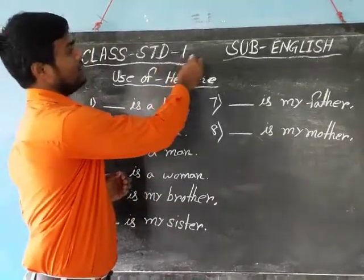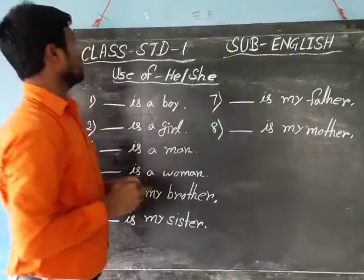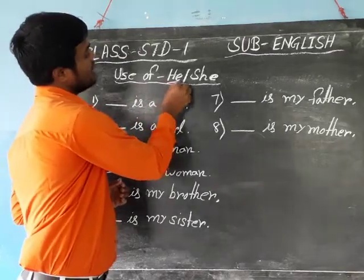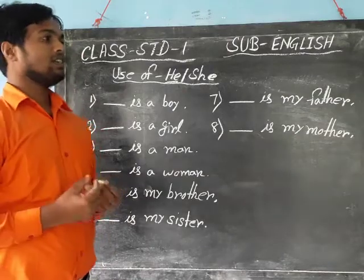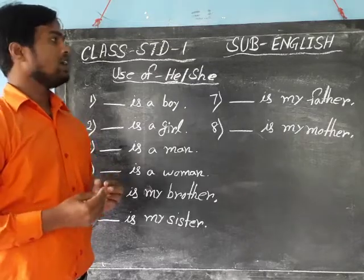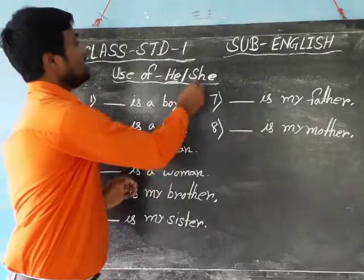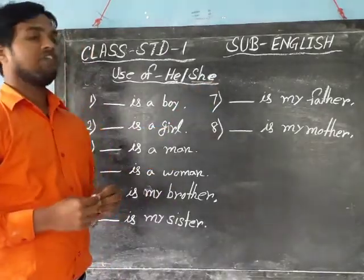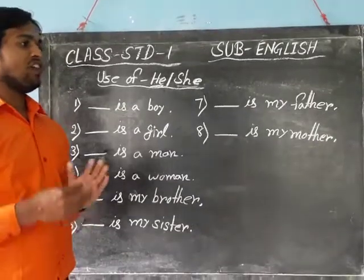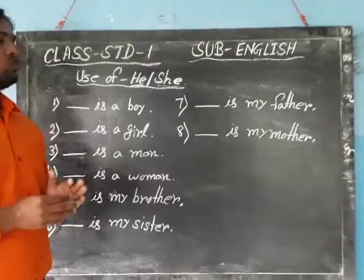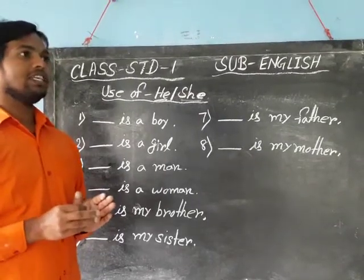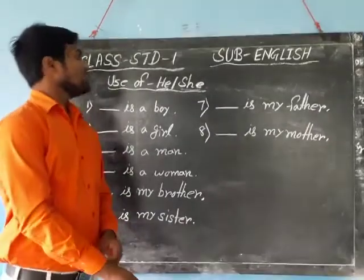For today's class, Standard 1, Subject: English. Topic: use of 'he' or 'she'. He is a masculine gender referred to a male person. She is used for feminine gender, referred to a female person. He is used for masculine gender referred to a male person, and she is feminine gender referred to a female person. Some examples: